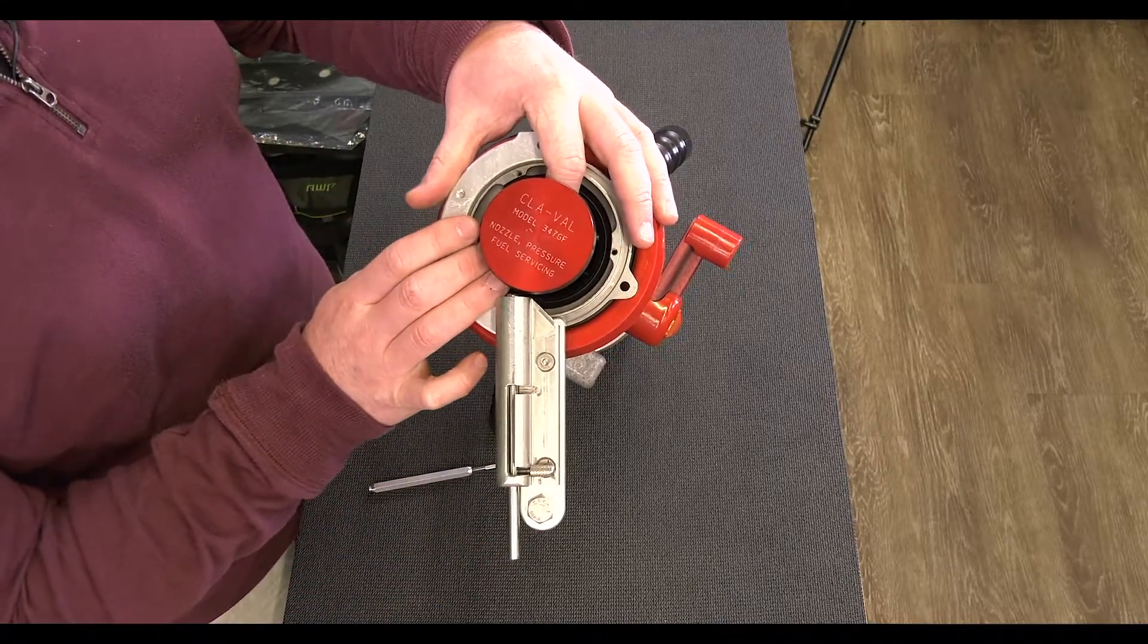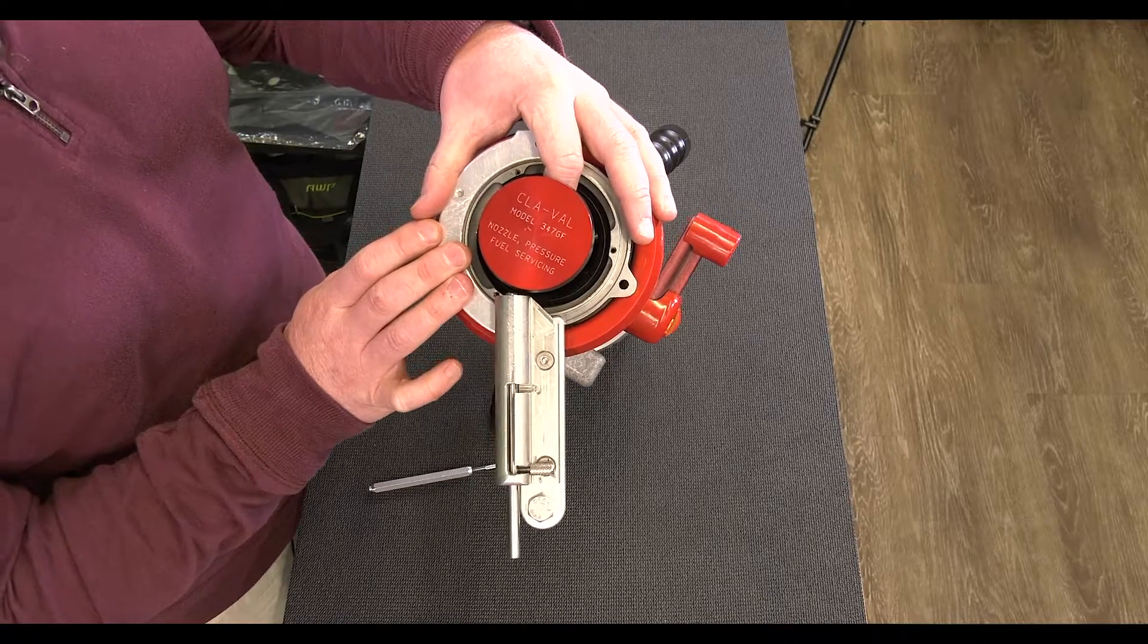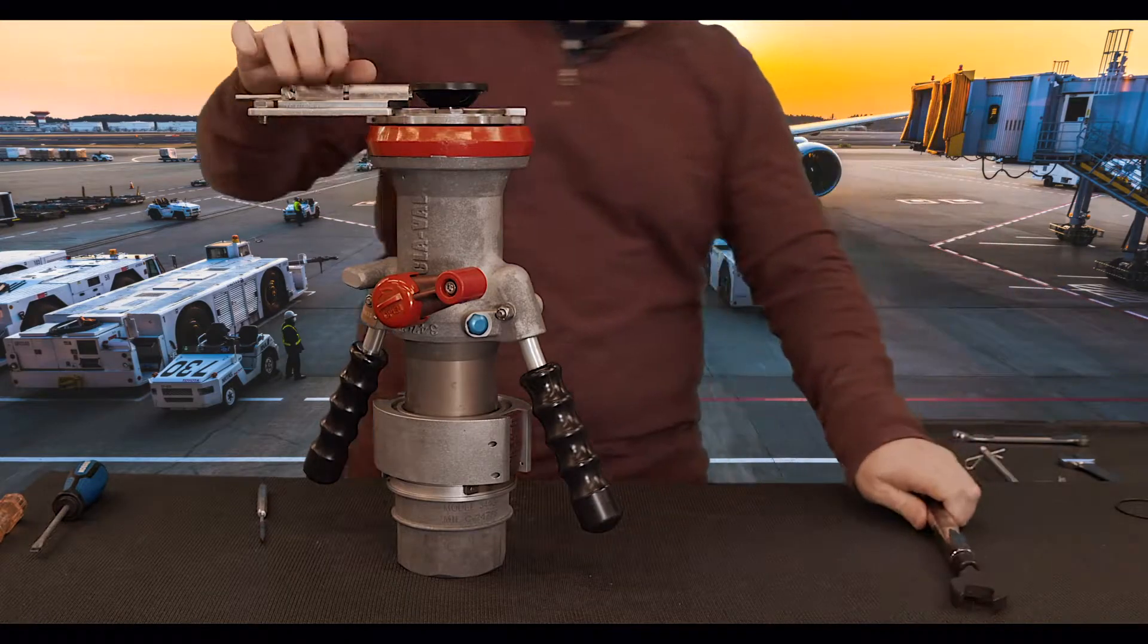Because we have a swivel nut free-floating design, there is no height that you have to work on for the poppet. So we can very easily, now that that's on, torque our swivel nut back on.